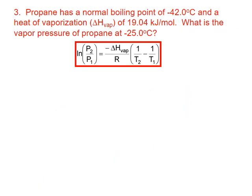In the third problem, we're asked to find the vapor pressure of propane at negative 25 degrees Celsius, given that the normal boiling point is negative 42 degrees Celsius and the heat of vaporization is 19.04 kilojoules per mole. Again, we'll use the two-point form of the Clausius-Clapeyron equation.